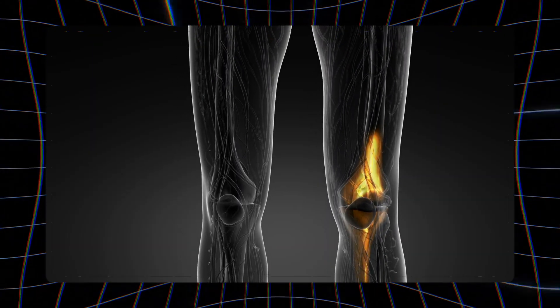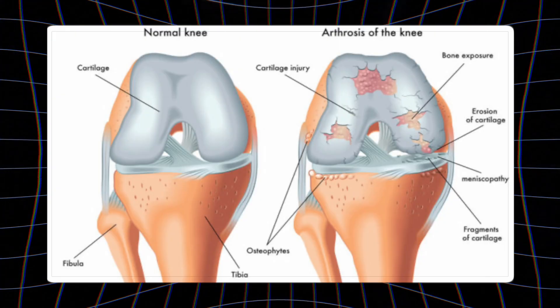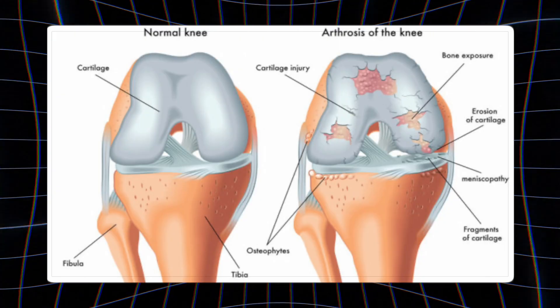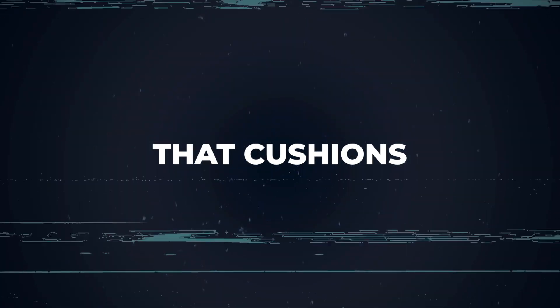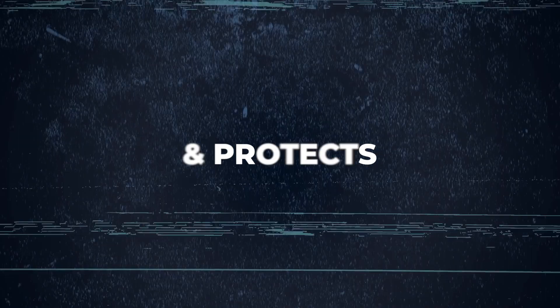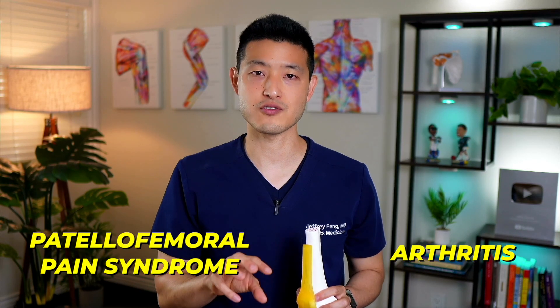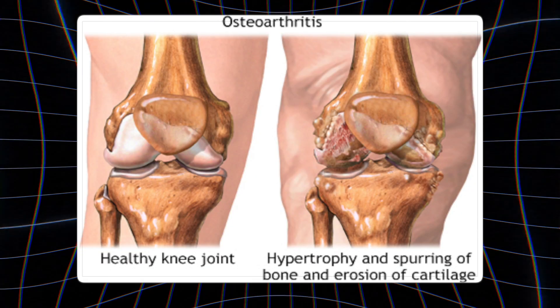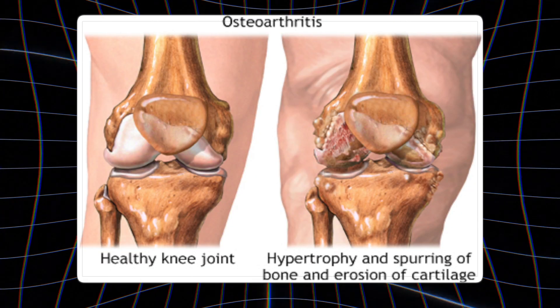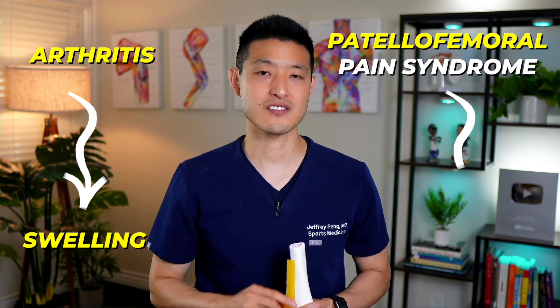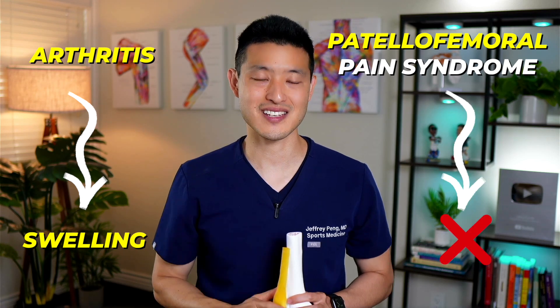Arthritis results from the deterioration or loss of the protective cartilage that cushions and protects the bones. One distinguishing factor between arthritis and patellofemoral pain syndrome is the presence of swelling. Arthritis often leads to swelling whereas patellofemoral pain syndrome does not.